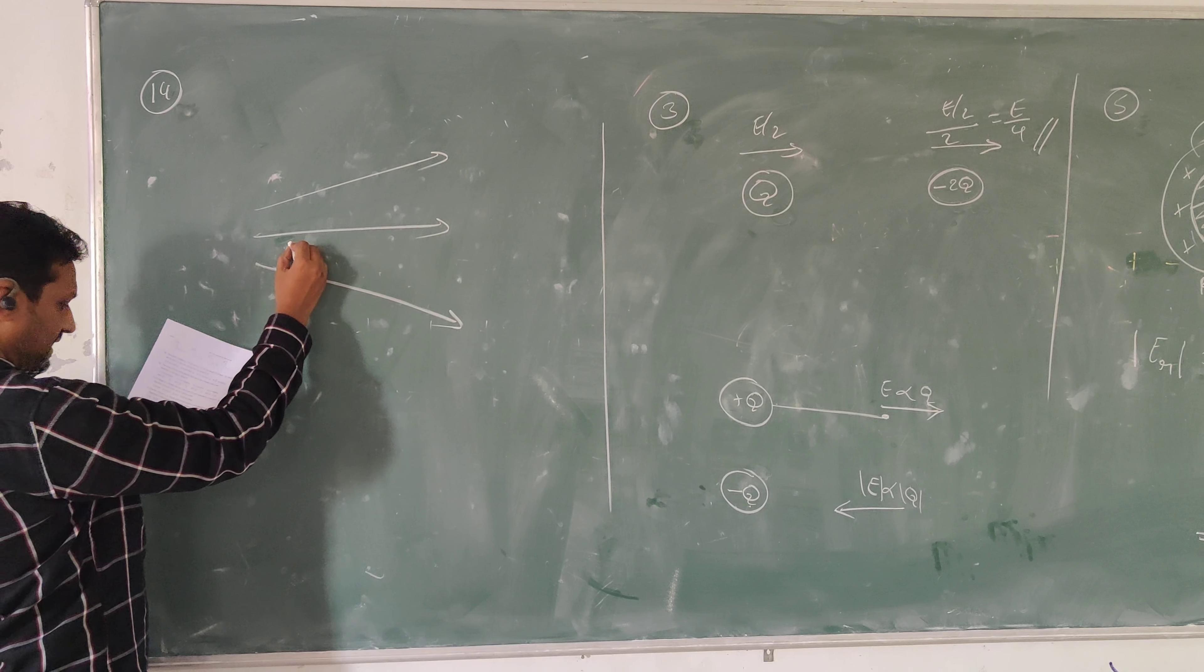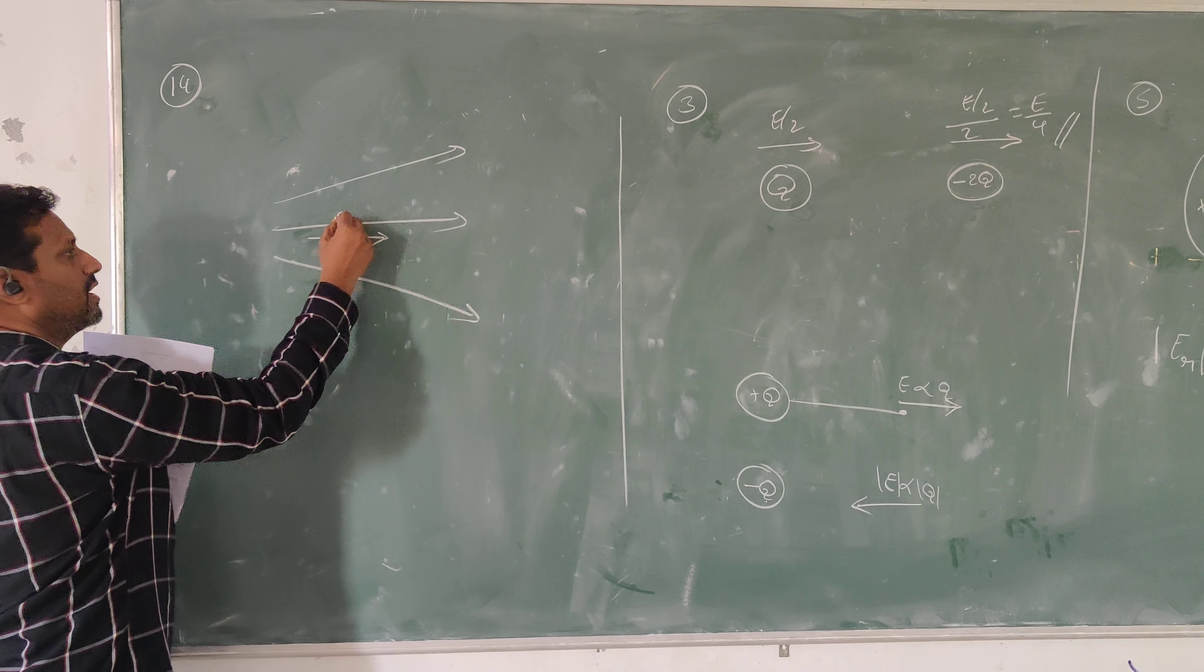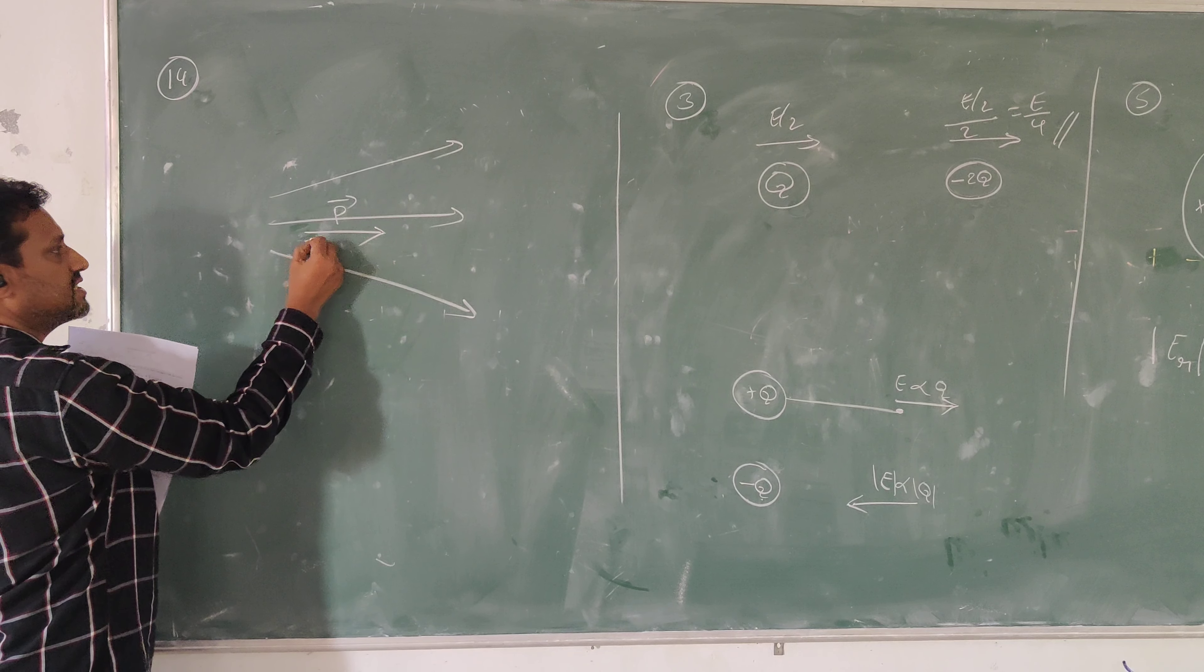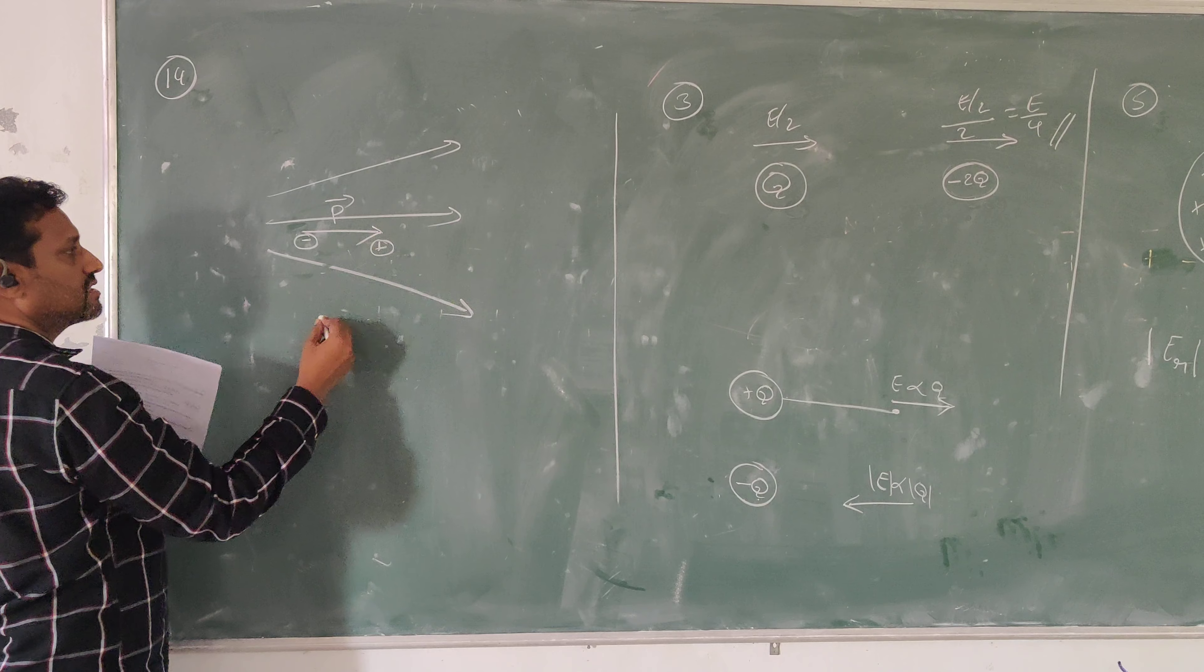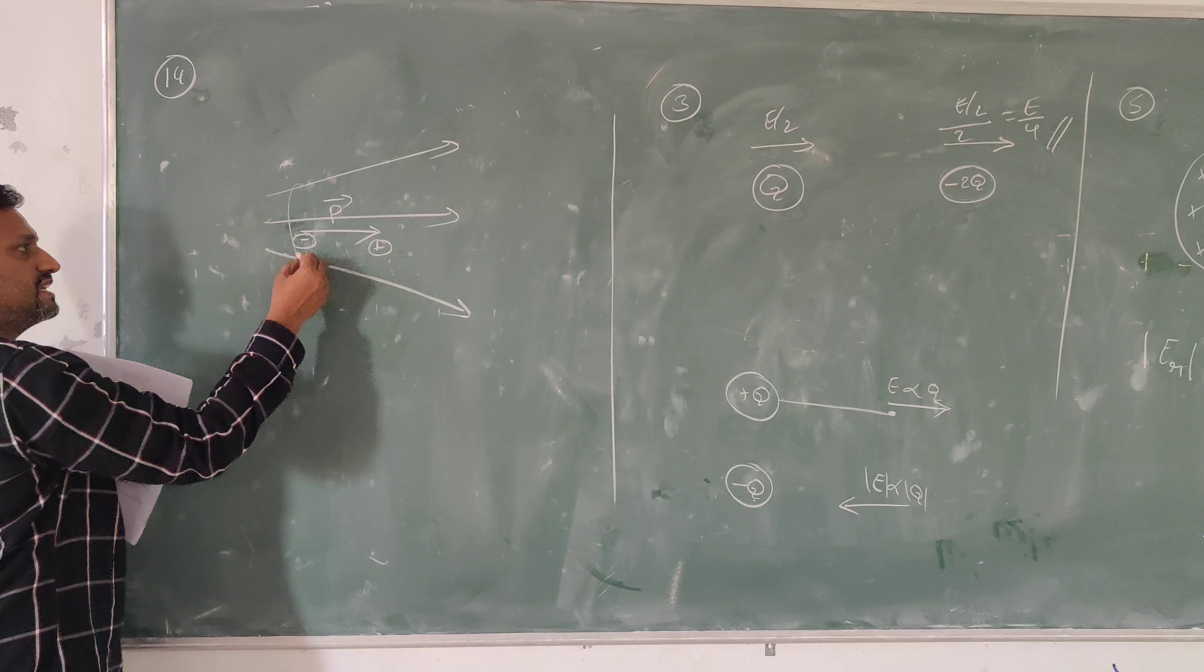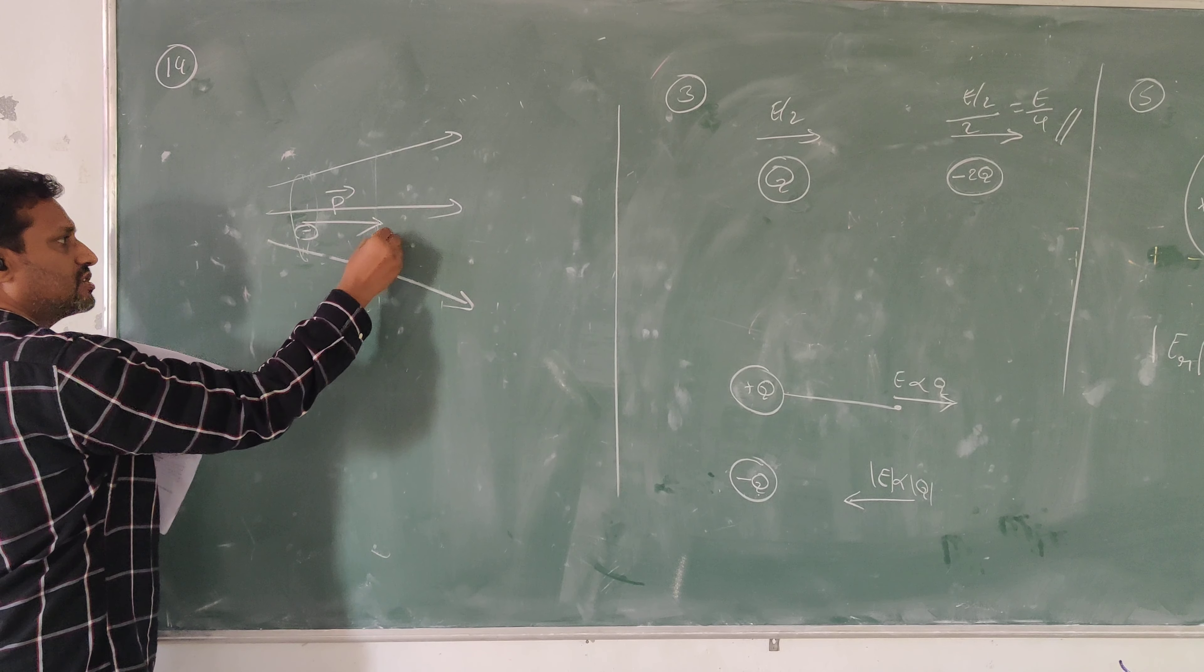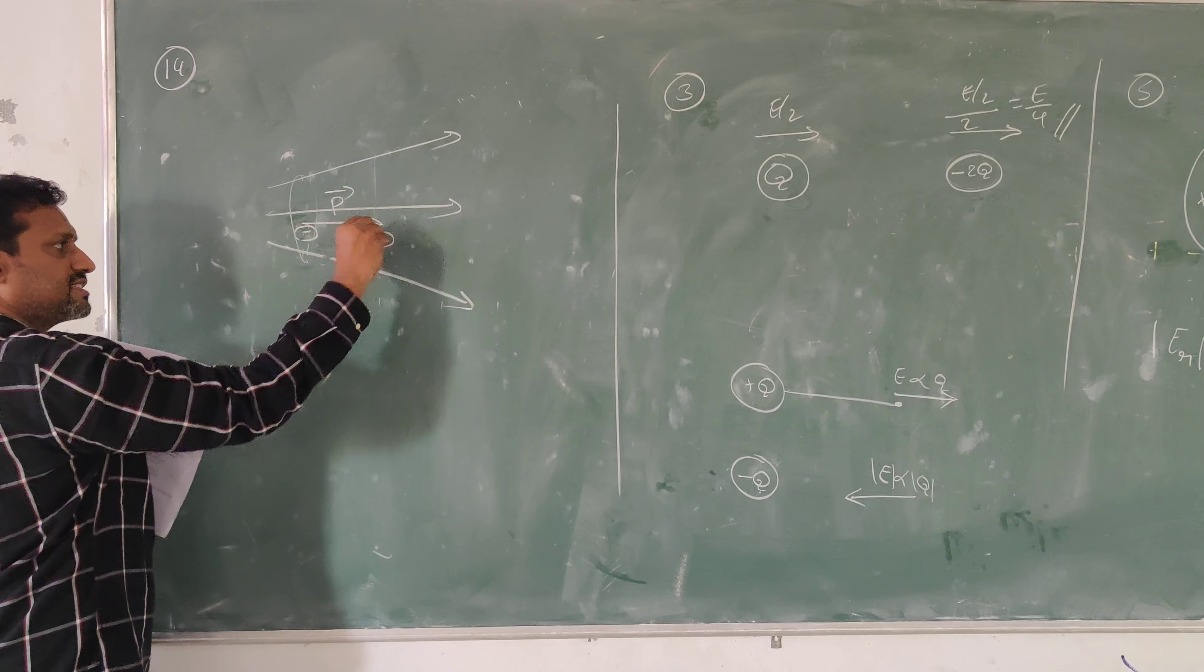In this non-uniform field, an electric dipole is placed of moment V1. This indicates the negative charge and the positive charge. At the place of negative charge, field lines are more concentrated, so this field is greater in magnitude. And at the positive charge location, the field is less in magnitude.